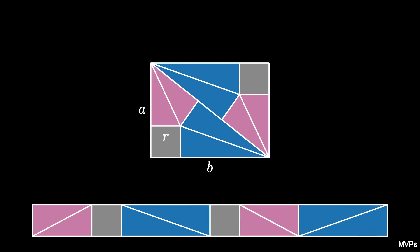From the decomposition, we can see that this new rectangle has length given by A plus B plus C, and the width of the rectangle is given by the in-radius R.